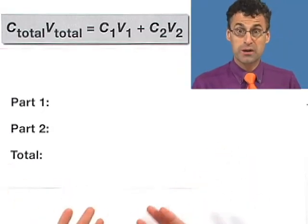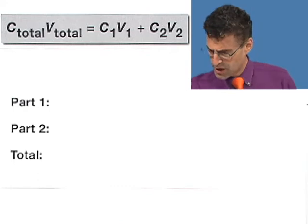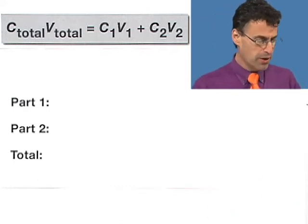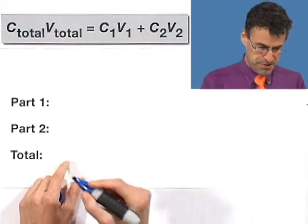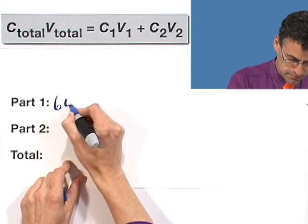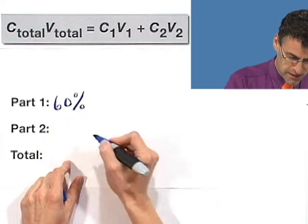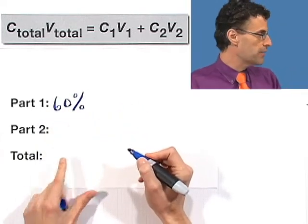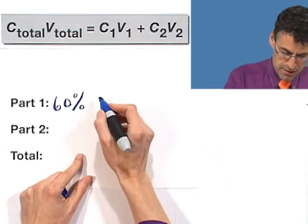So a nice way to organize our thinking here is just to write down the two different parts and the total and put together what we know. So here we go. OK. So the part one, we have the 60% mixture. And how much of it do we have? Well, we have 80 milliliters.